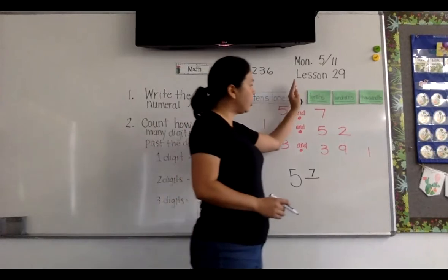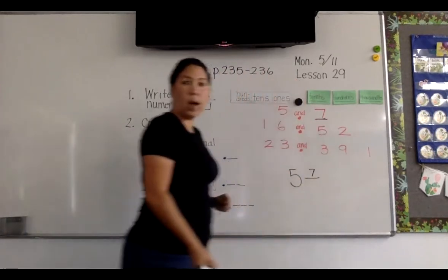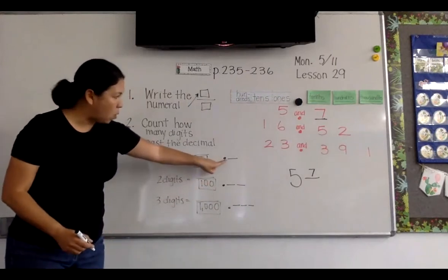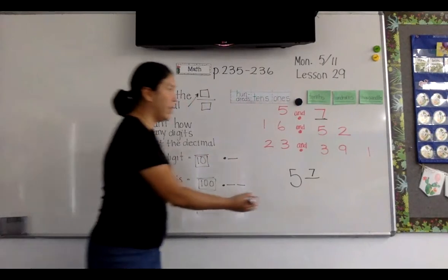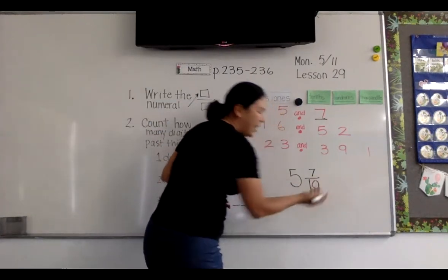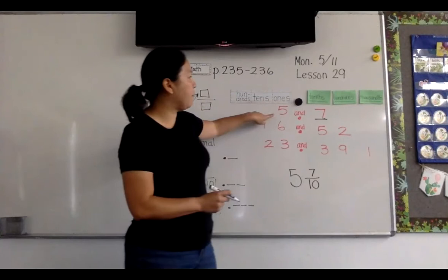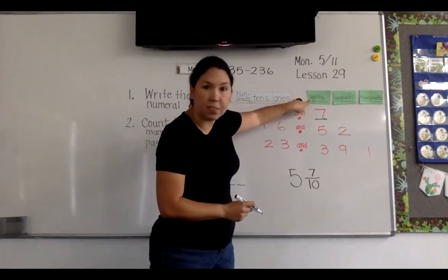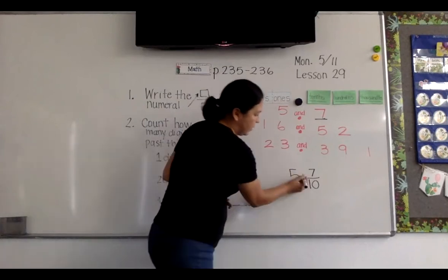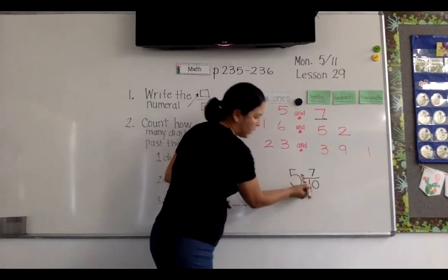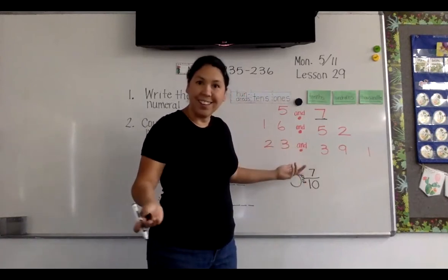How many digits are there past the decimal? There's only one. When there's only one digit past the decimal, we're going to put a 10. And it makes sense, because we're saying five and seven tenths. So when we write it: five — and this is our "and" right here, this is where the decimal point would be — five and seven tenths.